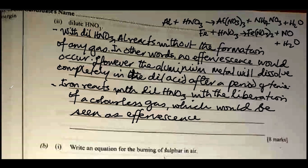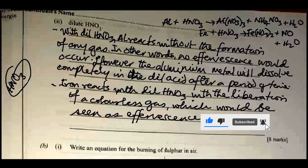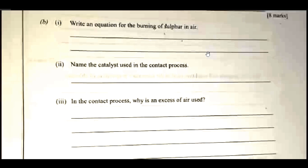HNO₃ is a strong oxidizing agent, so depending on its concentration it reacts with different metals to give different products. Unlike other acids that liberate hydrogen gas, HNO₃ does not behave that way — the hydrogen produced is always oxidized to water and HNO₃ itself is reduced to a lower compound of nitrogen depending on its concentration and the reactivity of the metal.